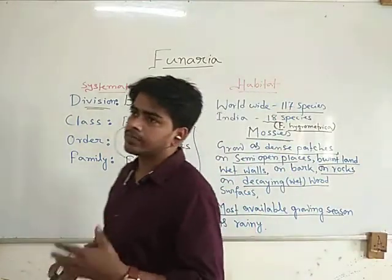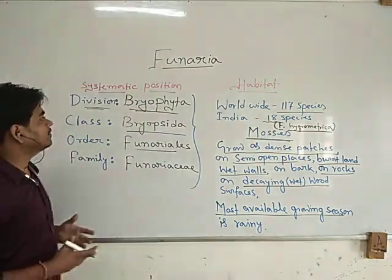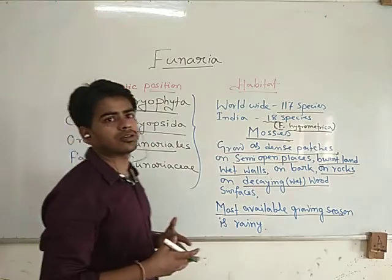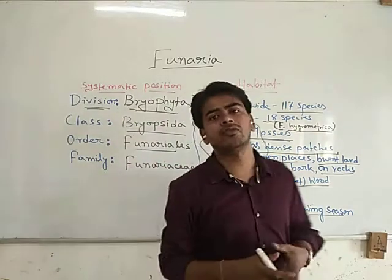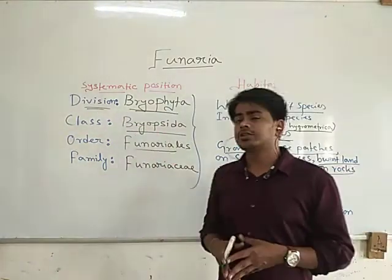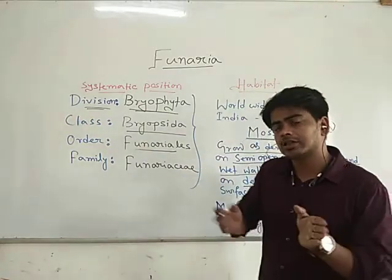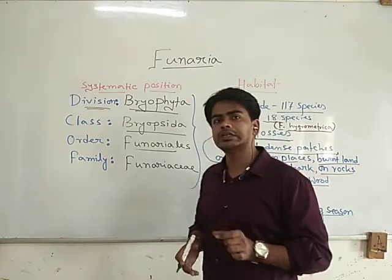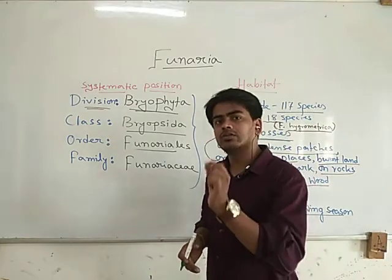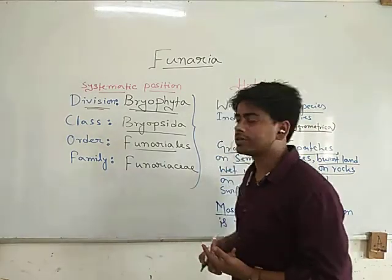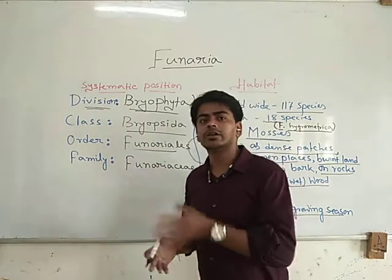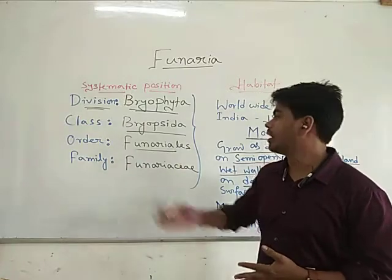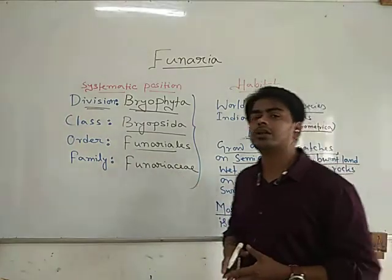Generally, we talk about systematic positions. They are coming under the same division that we already discussed about the other three members. It is Bryophyta. The class, it is Bryopsida. We have talked about two other classes, like Hepaticopsida and Anthocerotopsida. Now it is the third class, known as Bryopsida. Order, it is Funariales. And family, it is Funariaceae.